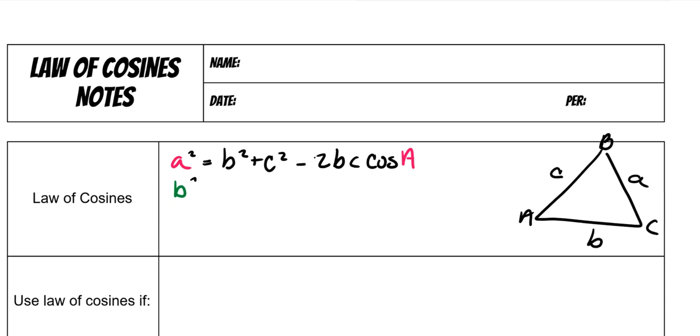So you have b squared, and then instead of b, you're going to have a and c, because those are the other two sides that are not b. And then 2 times a and c, and then the cosine of your angle b. So remember, lowercase is our sides, and then uppercase are angles.